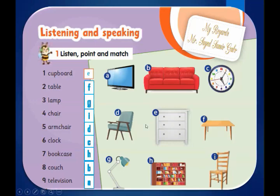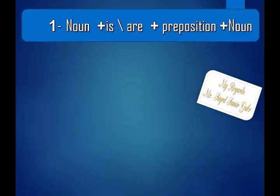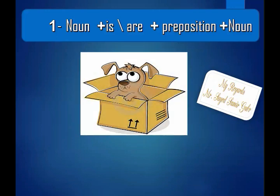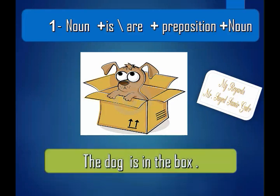Next, we will talk about prepositions. Prepositions means حروف الجر in Arabic. Such as: in, on, under, next to, between, behind. You can form a sentence like this: noun plus is/are plus preposition plus noun. Look at the picture — where is the dog? Yes, it's in the box, so: the dog is in the box.